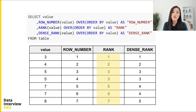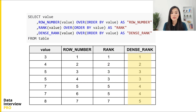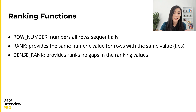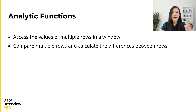The RANK function returns five distinct values — 1, 2, 3, 5, and 7 — with multiple rows sharing the same rank. The two rows with value 5 both get rank 3, and the two rows with value 7 both get rank 5. RANK does not always return sequential integers — in this example there are no rows with rank 4 or 6 — but it provides the same rank for rows with the same value. DENSE_RANK is similar to RANK in that rows with the same value share a rank, but it returns sequential integers with no gaps. To summarize: ROW_NUMBER numbers all rows sequentially; RANK gives the same value for ties but leaves gaps; DENSE_RANK gives the same value for ties with no gaps.